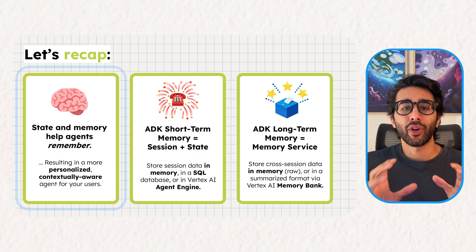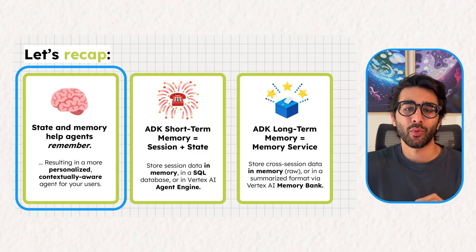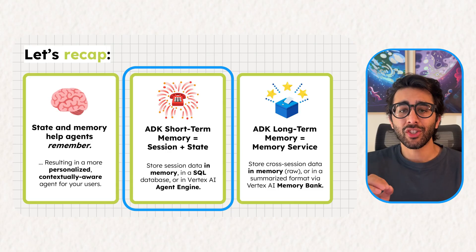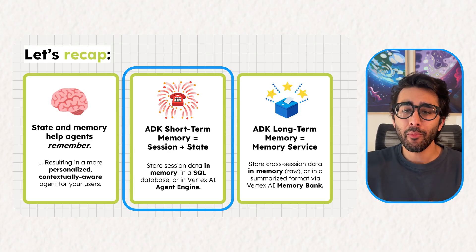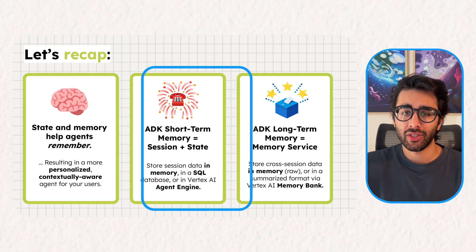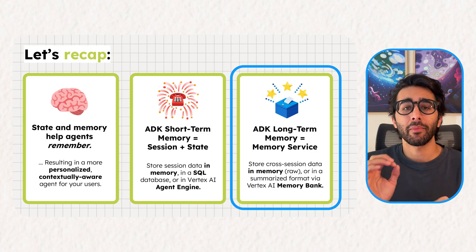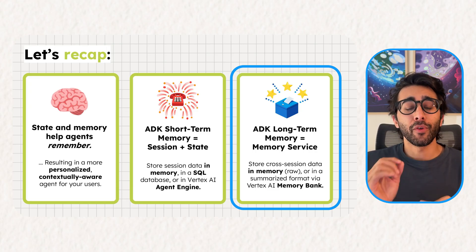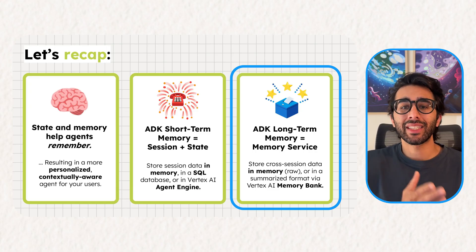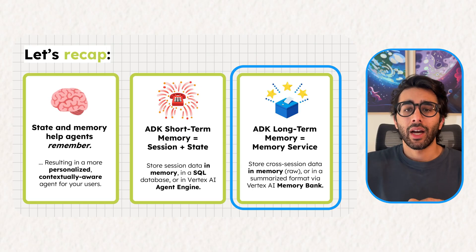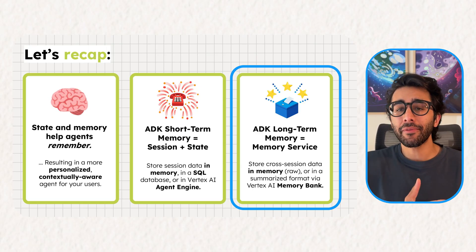So let's recap. We've seen how state and memory create more personalized and context-aware agents. For short-term memory, ADK uses a session and its state, which acts as a temporary scratchpad for a single conversation. For long-term memory, ADK uses a memory service — we focused on the Vertex AI memory bank, which intelligently summarizes conversations, allowing the agent to recall key facts from past interactions. Now you have the building blocks to create your own powerful, personalized, memory-full AI agents.